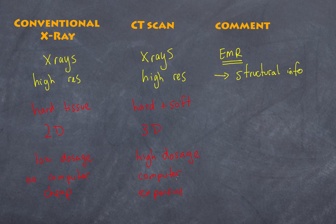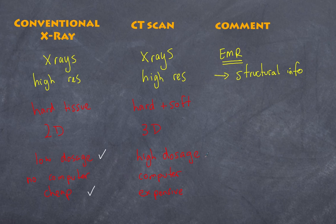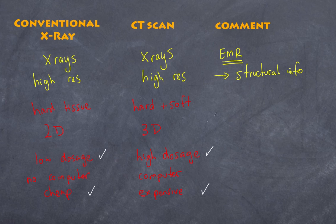A doctor may look at an X-ray and, because of its low dosage and low cost, use it if it does the job. However, if the information from an X-ray does not give enough to make an accurate diagnosis, then — although a CAT scan involves a high dosage and is more expensive — it may lead to better diagnosis and therefore better treatment options. It is a weighing of the pros and cons. I hope that has helped you understand CAT scans a little better. Please subscribe to the channel and share this video. I'm Paul from High School Physics Explained. Thanks for watching.